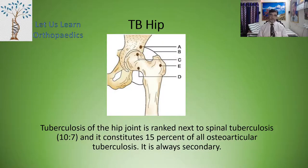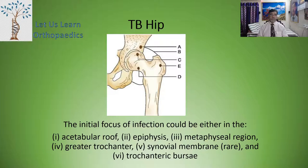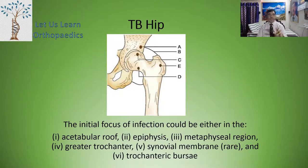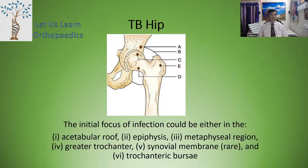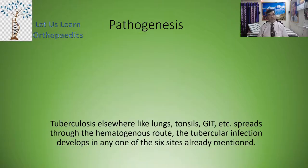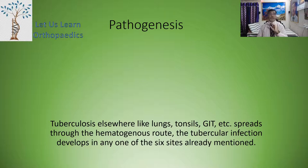It is always secondary. The initial focus of infection could be either in the acetabular roof, as represented by A in the diagram; at the epiphysis, shown by C; in the metaphysis, shown by D; in the greater trochanter; in the synovial membrane; or in the trochaneral region. Tuberculosis elsewhere, like in the lungs, bone cells, GIT, etc., spreads through the hematogenous route.